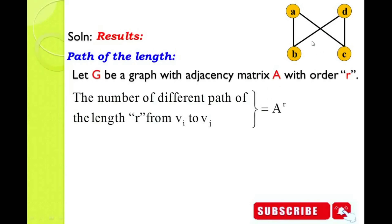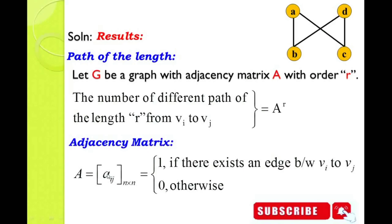Our first target is to find the adjacency matrix from the given graph. The adjacency matrix is A = [A_ij], an N×N matrix, where N is the number of vertices. Both rows and columns represent vertices. A_ij equals 1 when there is an edge between one vertex and another vertex; otherwise it is 0. Zero means there is no edge between those vertices.